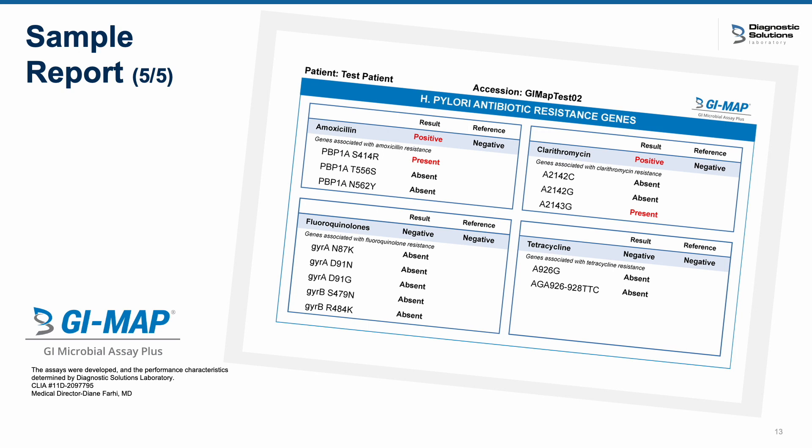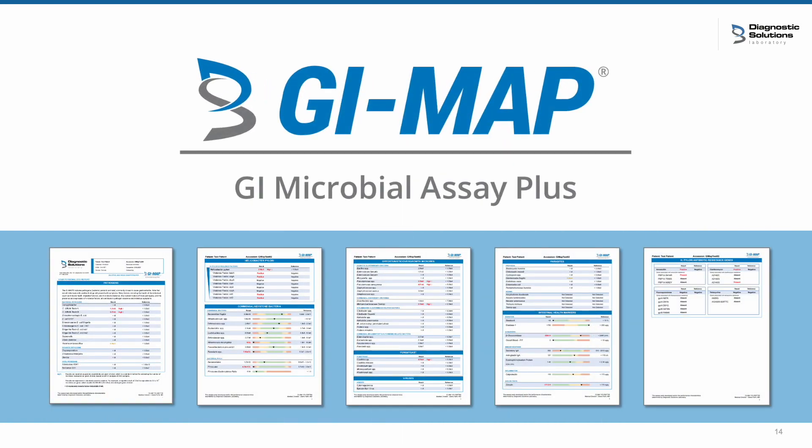On page five, there are no significant changes to this part of the test, but you will experience new formatting for the H. pylori-specific antibiotic-resistant genes. Thank you for watching this quick video walkthrough. We are confident you will find these enhancements helpful in your interpretation of the GI Map and for optimizing your patient outcomes.